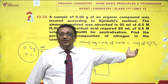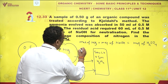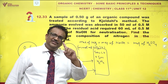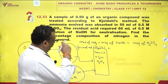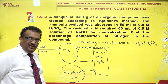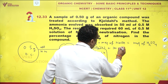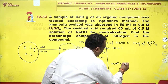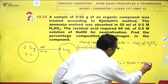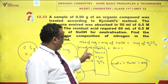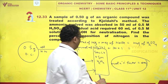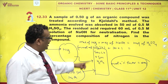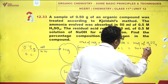Milliequivalents of base total equals milliequivalents of acid. Milliequivalents of ammonia is millimoles of ammonia multiplied by 1, because the N-factor of ammonia is 1. Plus milliequivalents of NaOH: 60 into 0.5, which makes it 30. NaOH has 30 millimoles, and N-factor is 1. This equals millimoles of sulfuric acid: 50 into 0.5. For H2SO4, the N-factor is 2, not 1. So 50 into 0.5 into 2.